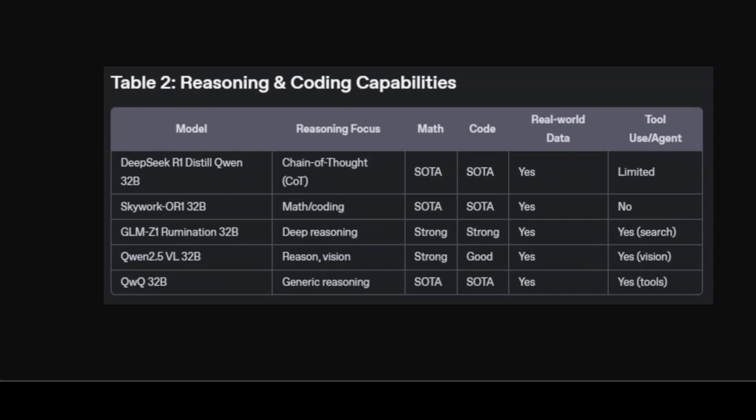Next, this table gives an overview of reasoning and coding capabilities. What has changed in the last six months around 32 billion models is reasoning — most either are purely reasoning models or offer a way to toggle reasoning on and off. Reasoning and coding skills define this model group. For example, DeepSeek R1 Distill and Skywork OR1 stand out in math and coding specifically for their reinforcement learning-driven reasoning breakthroughs.